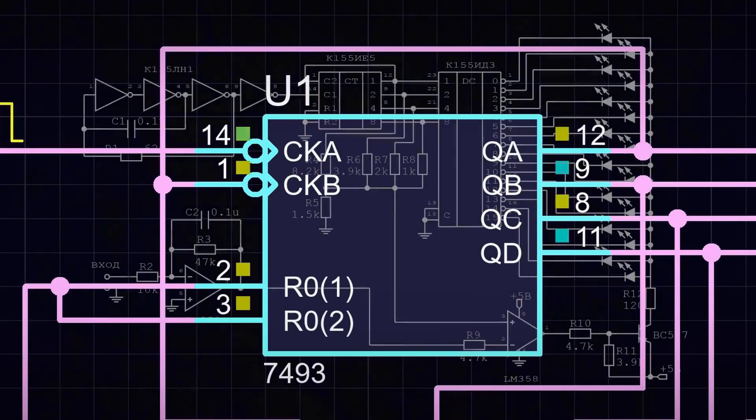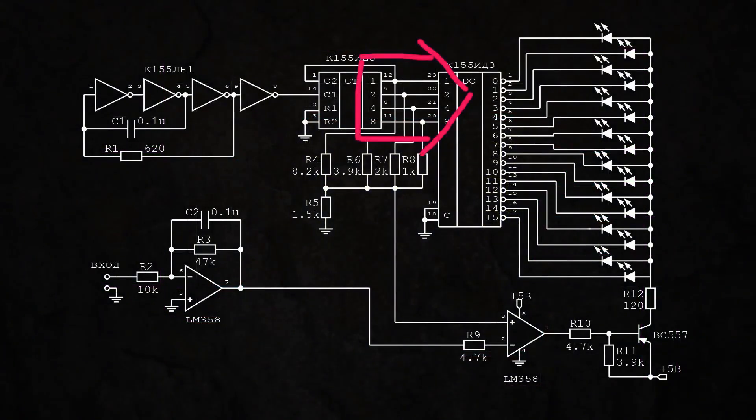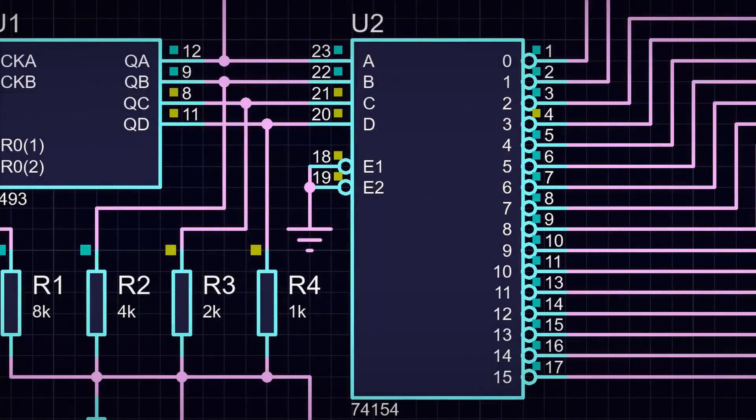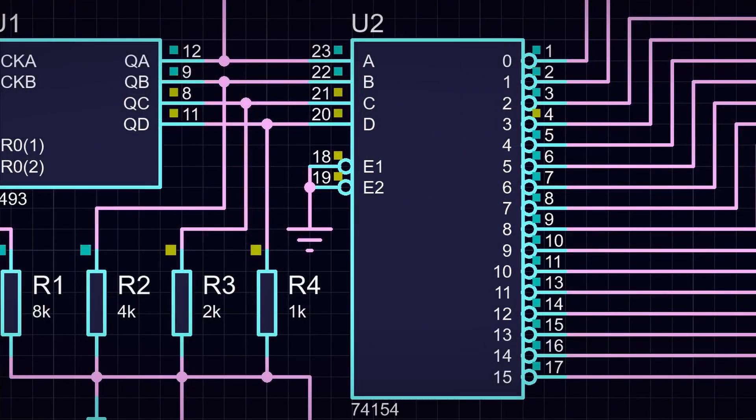The signals from the outputs of the counter are fed to the ID3 decoder, which outputs a logical 0 only on the output whose digital code was received at its input. Thus, in an endless loop, the circuit cycles through all the outputs of the decoder.